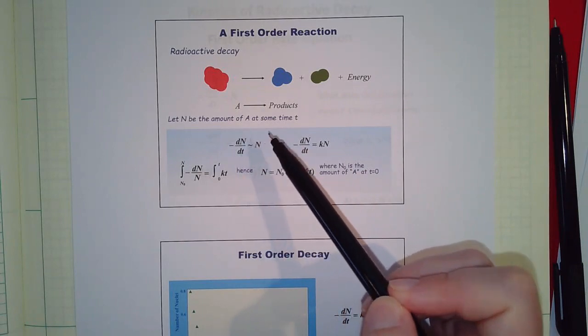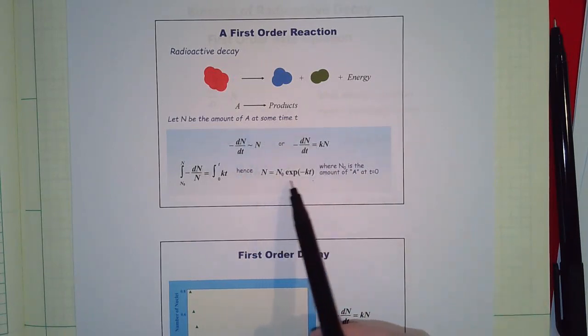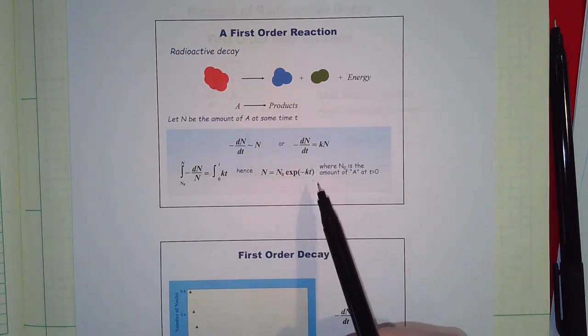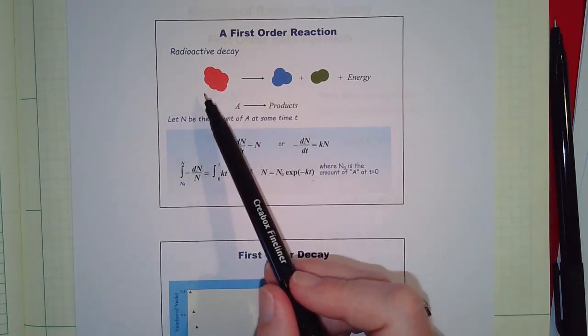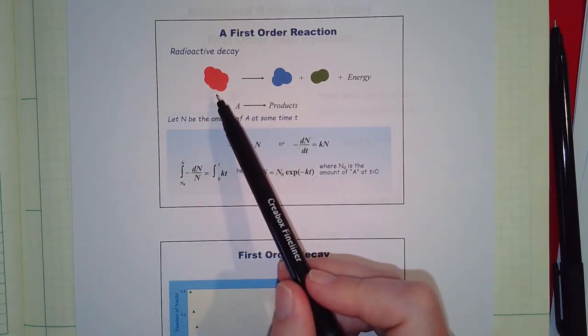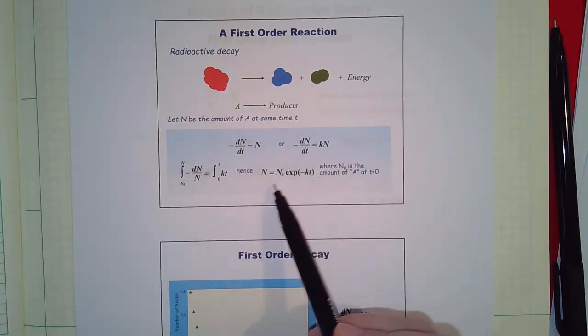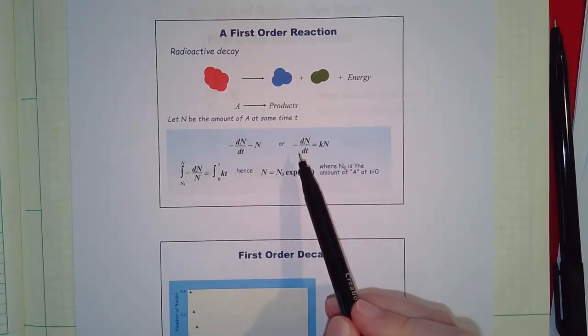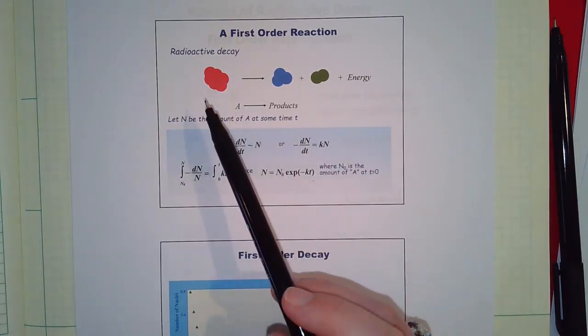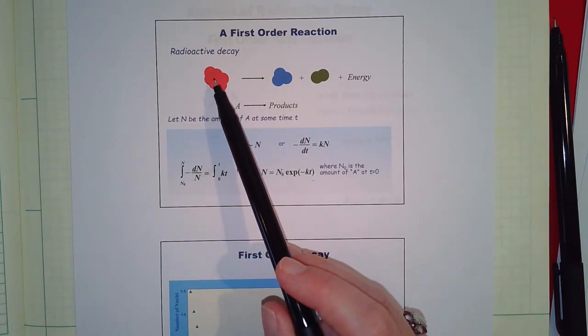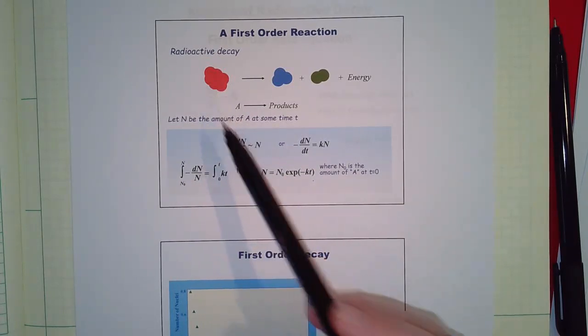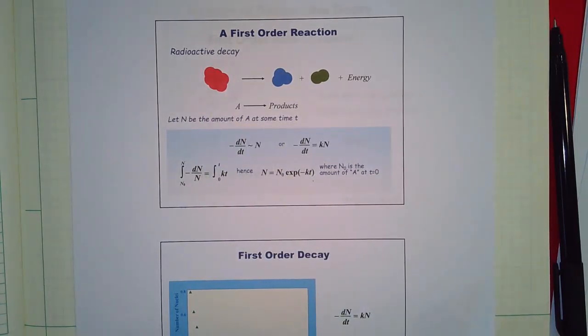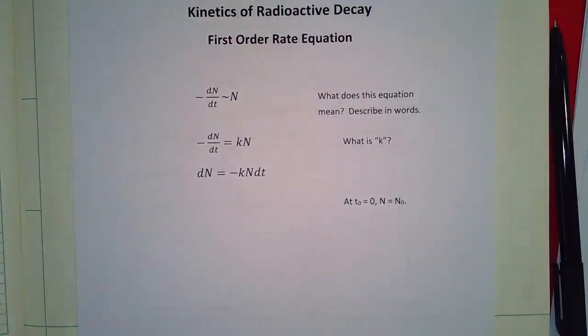We're going to look at its rate laws and derive this equation, and this is also important for polymerization kinetics because the exact same expression is used for the decomposition of a peroxide initiator for a free radical polymerization. So we will use this again later in the course.